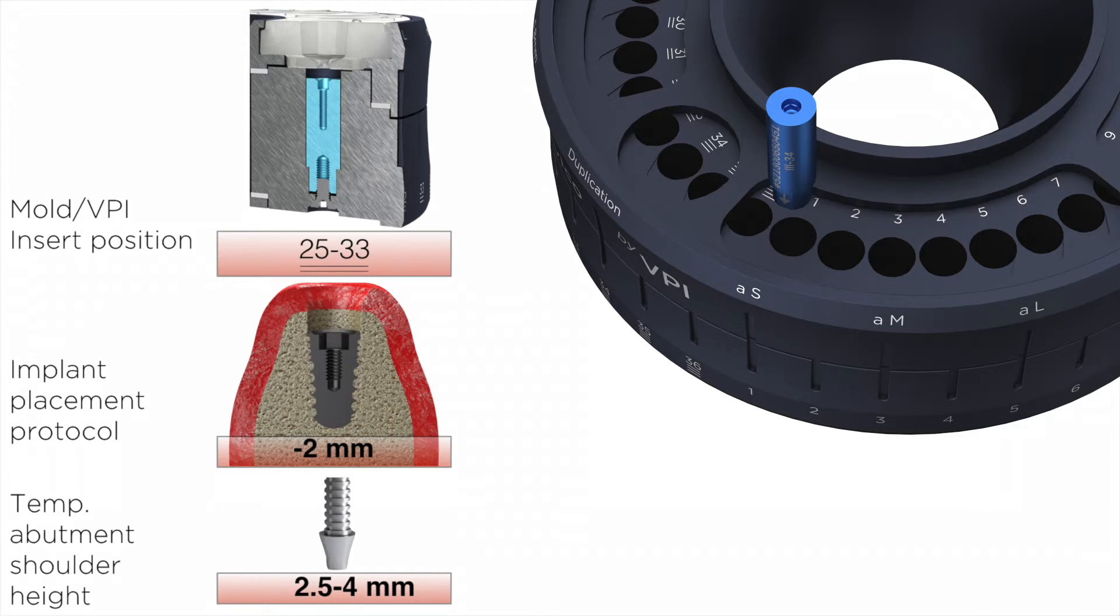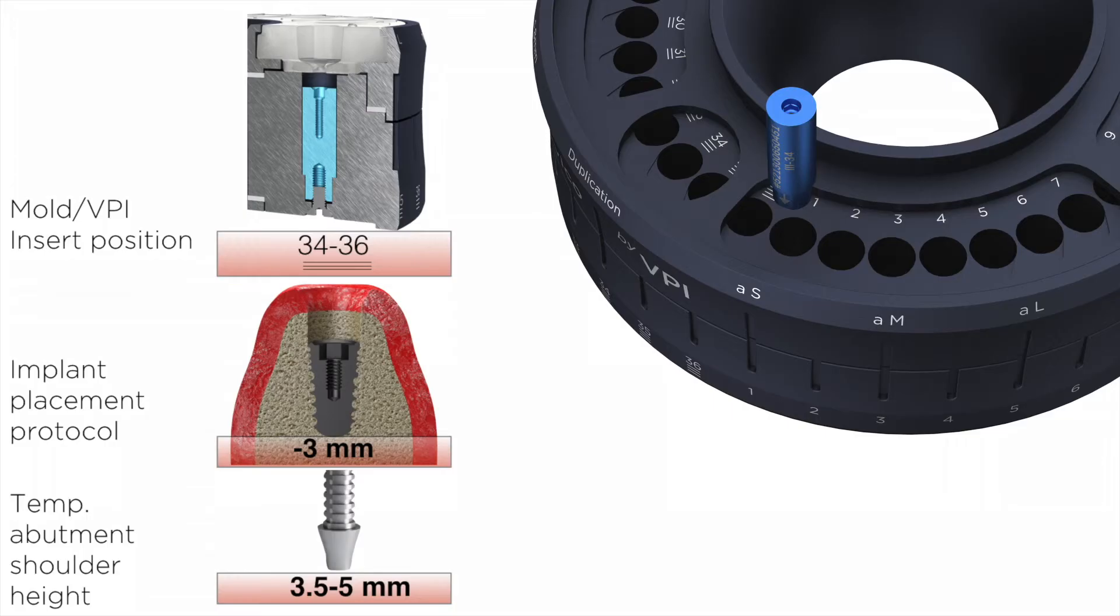Sockets number 29 to 33 can receive the VPI prosthetic connection insert, the last being sunk two millimeters into the socket. This is useful if your implant protocol placement involves two millimeter sub-crestal placement.